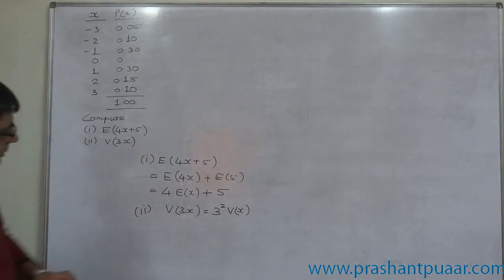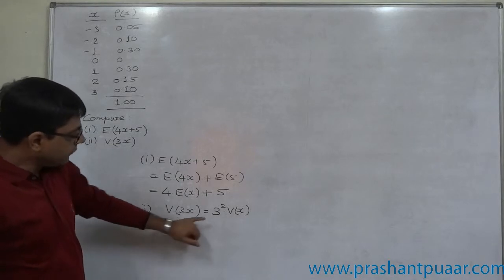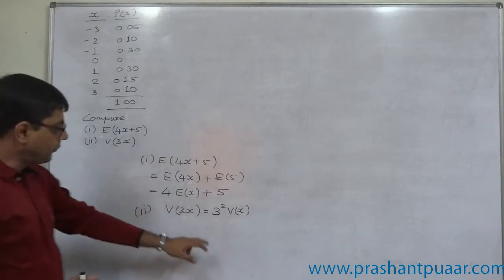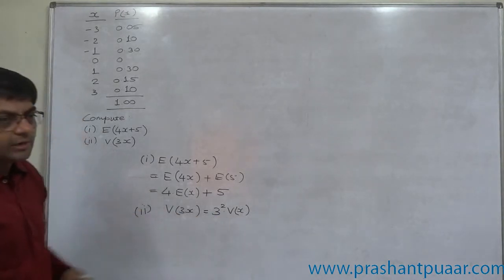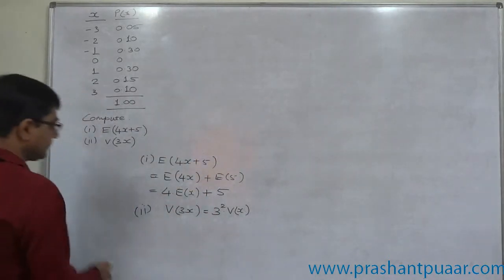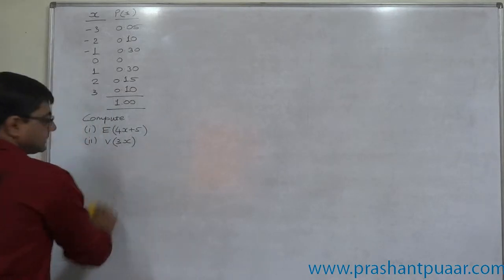The variance of the new random variable after multiplication will be squared value of the constant value times the original variance. So for this result, we need to calculate V of x. So let us first calculate E of x as well as V of x. And then we can find the answers of these two questions.